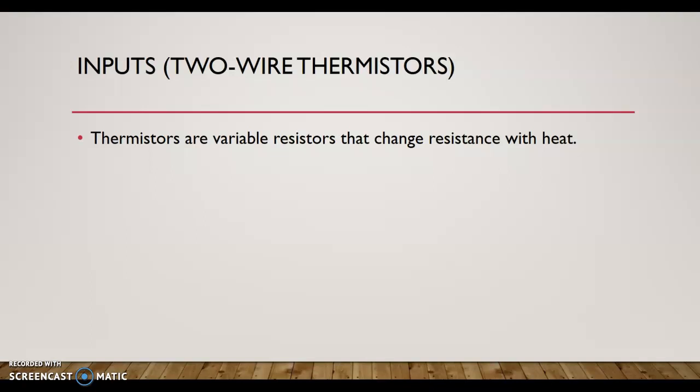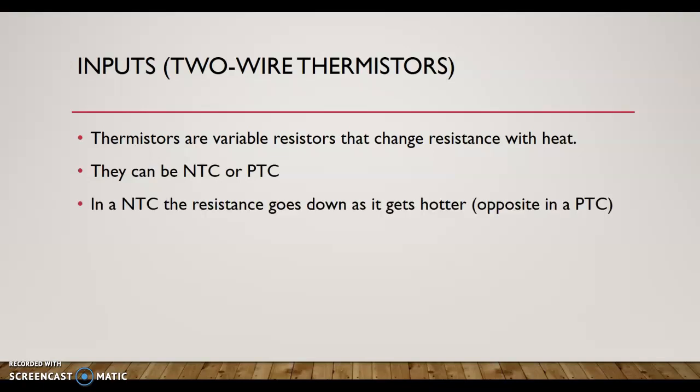Next we'll look at two-wire thermistors. Thermistors are variable resistors that change resistance with heat. They can either be NTC or PTC—negative temperature coefficient or positive temperature coefficient. An NTC, negative temperature coefficient resistor, the resistance goes down as it gets hotter. This is opposite of what you think. That's why it's called negative. PTC, positive temperature coefficient, as temperature goes up, resistance goes up. That's pretty normal. But on a variable thermistor, like what we use for temperature sensors in the car, it's going to use an NTC, which the resistance goes down as it heats up.